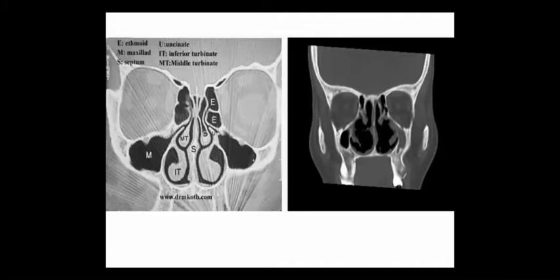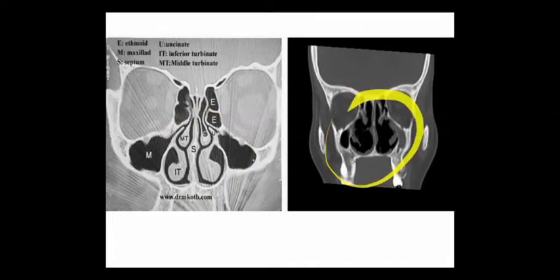The CT scan shows normal turbinate bones on the left and atrophy of turbinate bones on the right side.